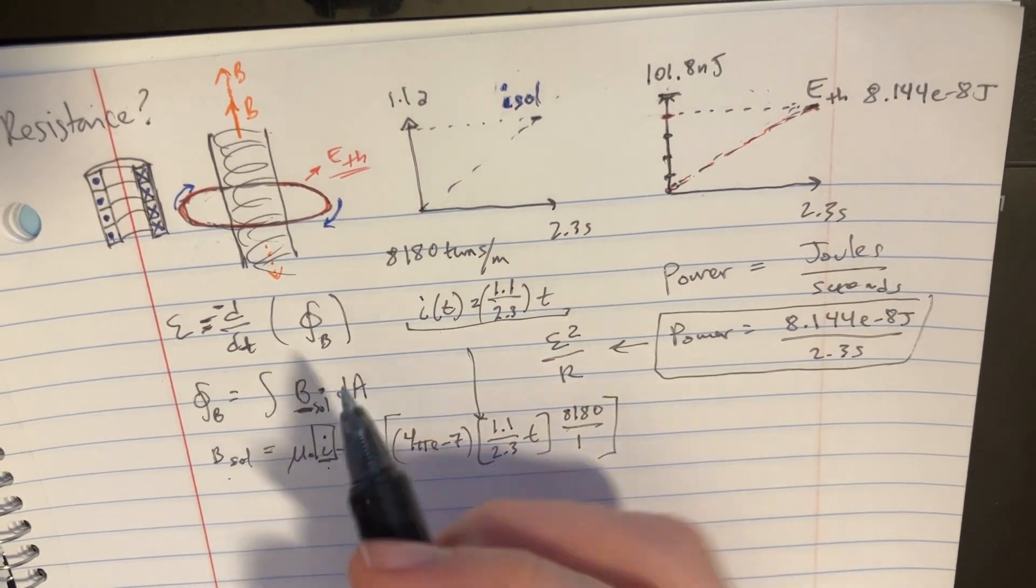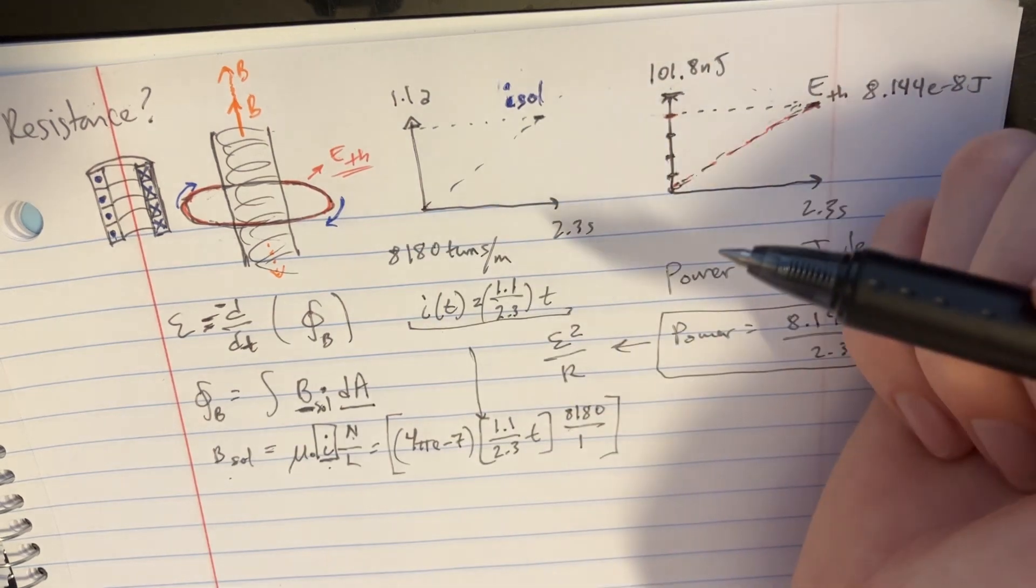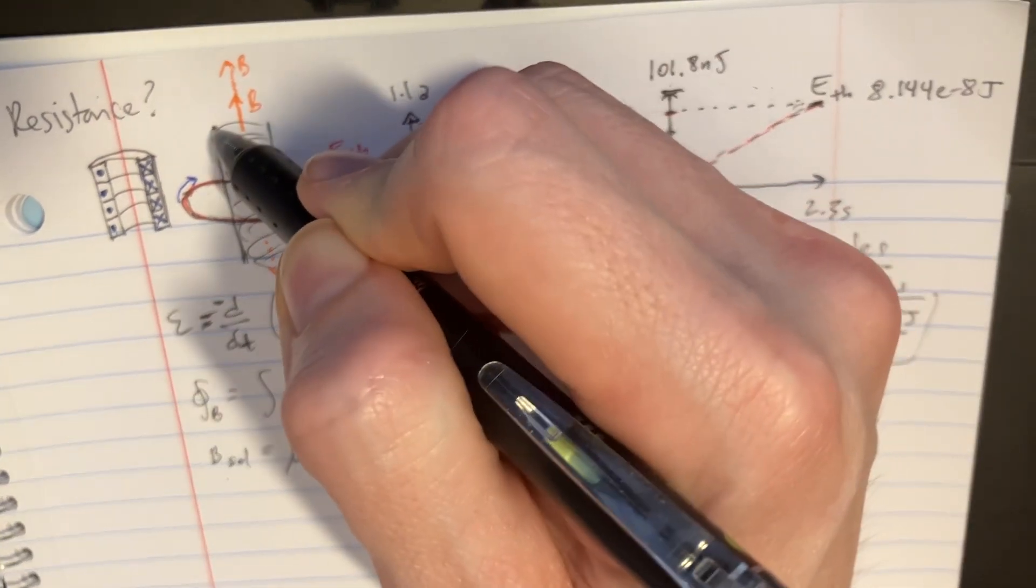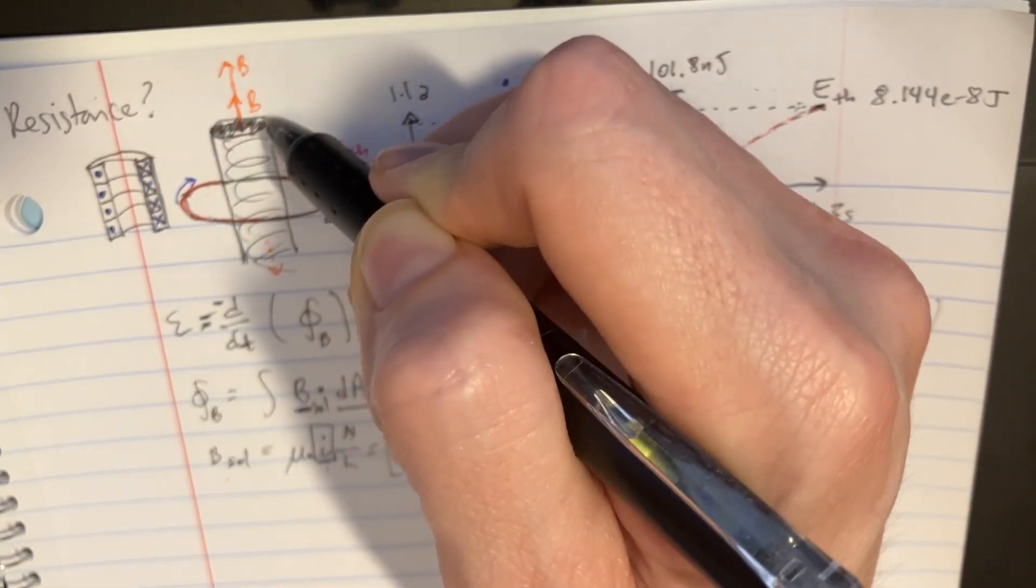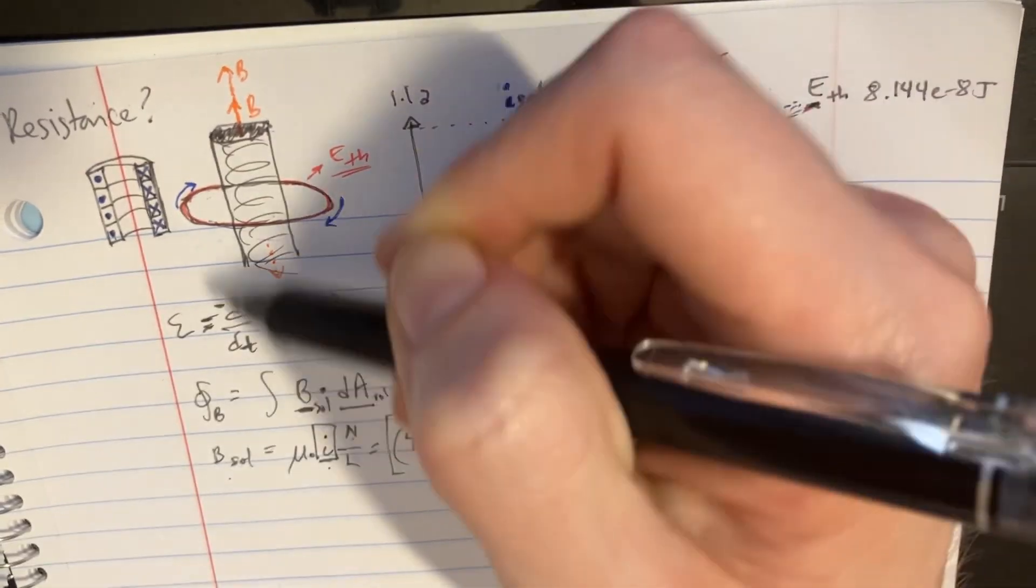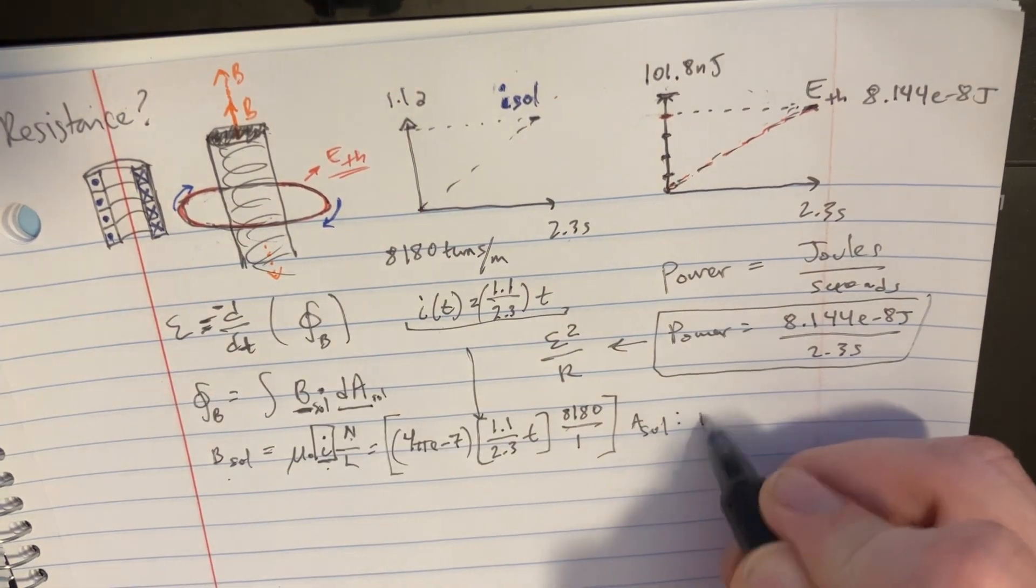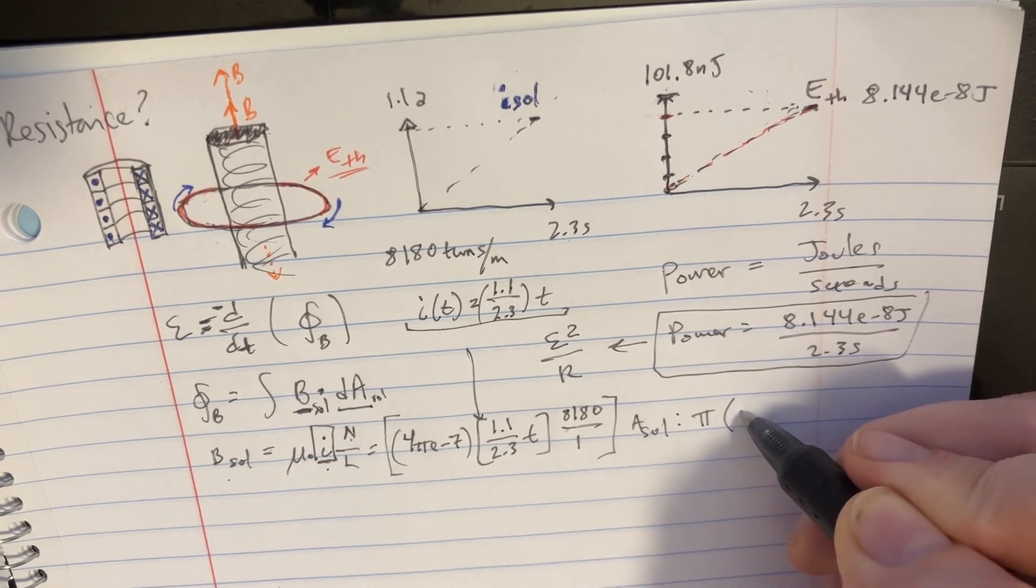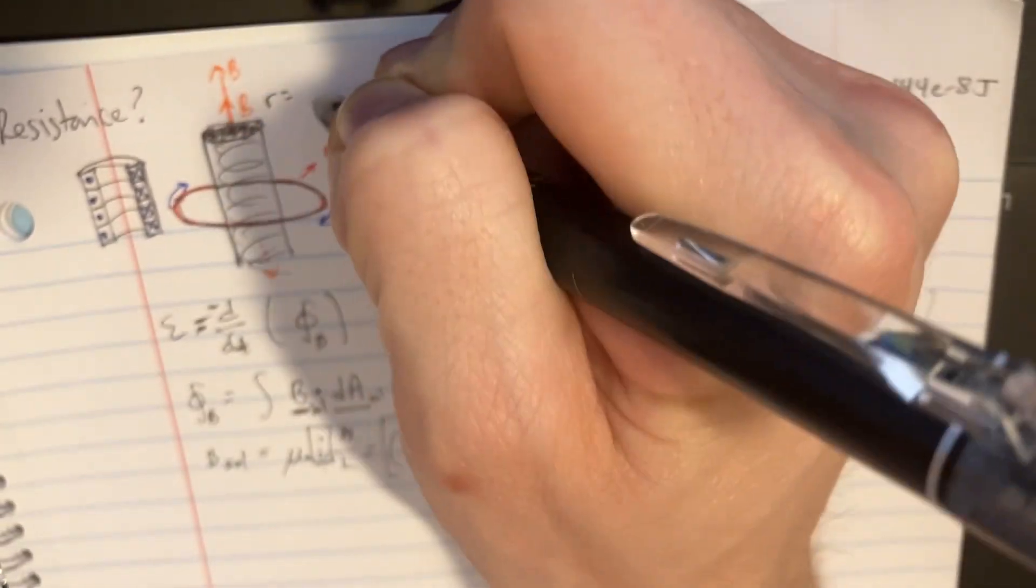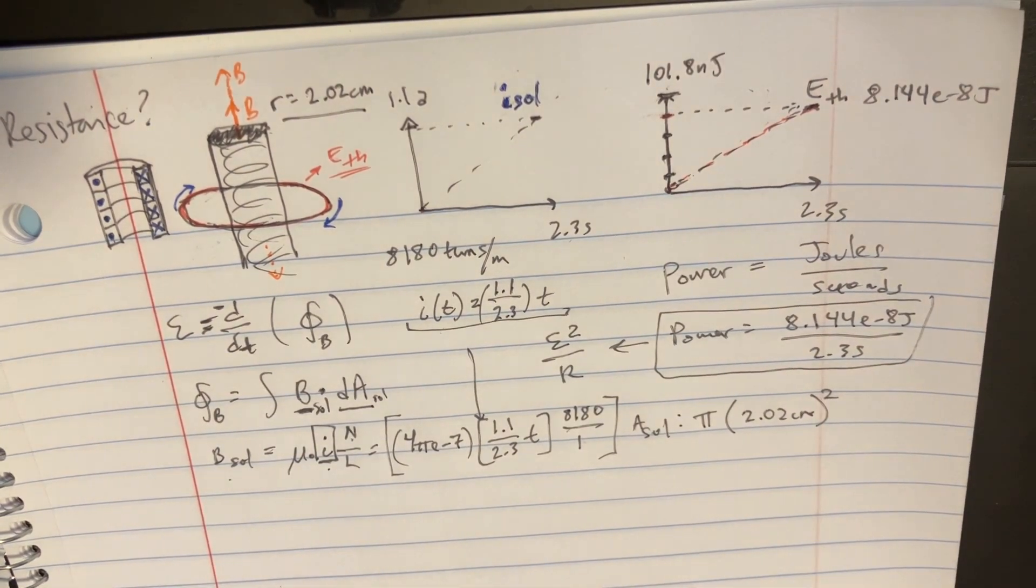All right, so now we figured out what the B_sol is. I'll go ahead and multiply that. I think the cosine is going to be zero degrees so it's just going to go right into one. And then the dA, if we were to integrate the dA, isn't that just going to be the area of the solenoid over here? We're dealing with the solenoid so it's probably going to be the area of the solenoid that we have to deal with. So we'll go ahead and plug that in there. So A_sol is going to be equal to pi r squared, which is pi, and then the radius for this particular one is going to be - I forgot it's a radius in here as well - 2.02 centimeters is our radius. So 2.02 centimeters squared.